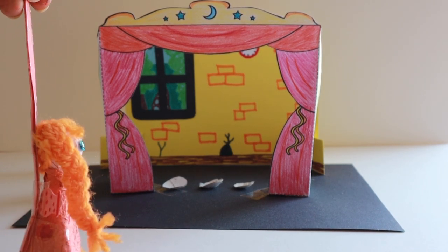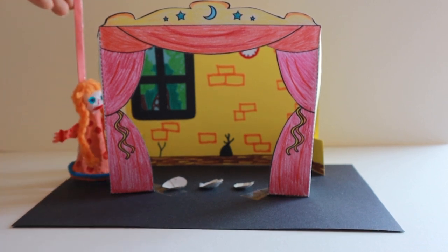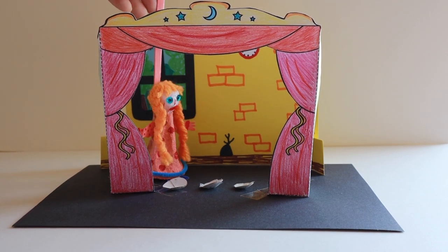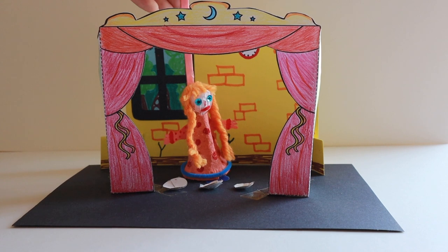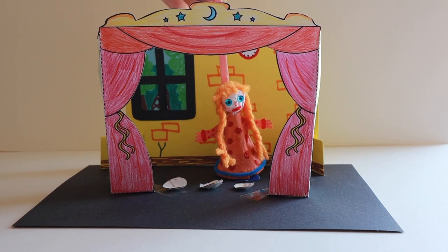Goldilocks was very hungry, but she spied the bear's house. There were three bowls of porridge inside. The first was too hot. And the second was too cold. But the third was just right.